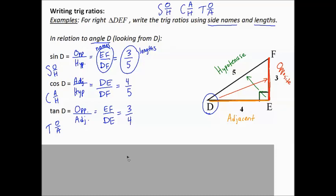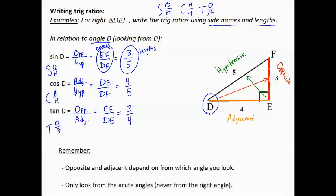Now, a couple of things to remember. Opposite and adjacent depend on from which angle you look. So, looking from angle D, that's the opposite. But not if we look from a different angle. Also, only look from the acute angles. Never from the right angle. Why is that? Well, if I look from angle E and I label the hypotenuse, opposite is the same thing. And this is supposed to be a ratio of two different sides.